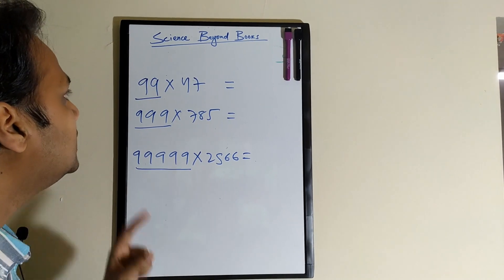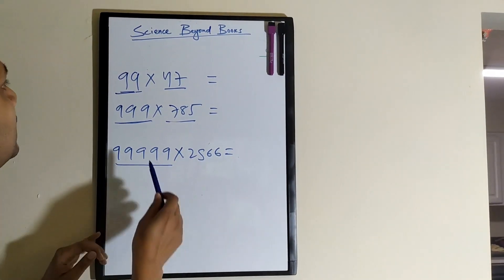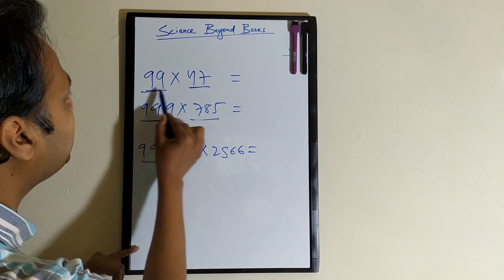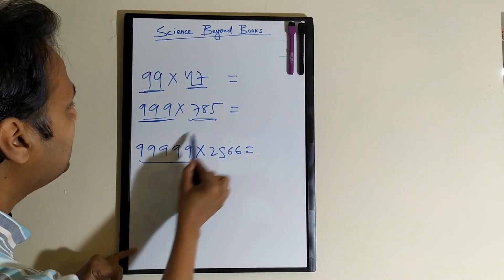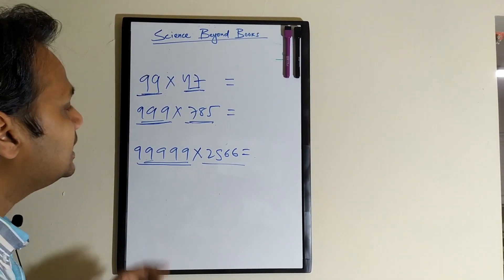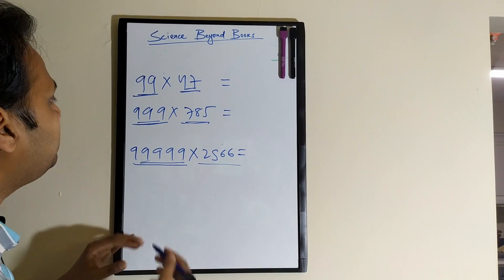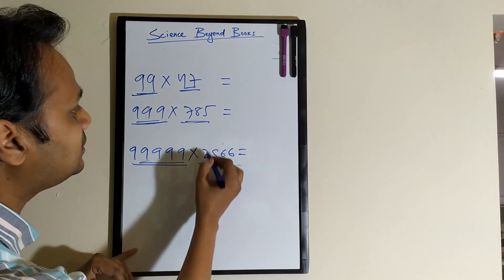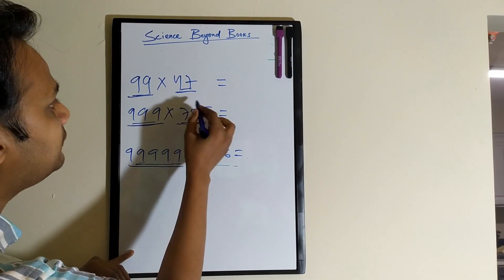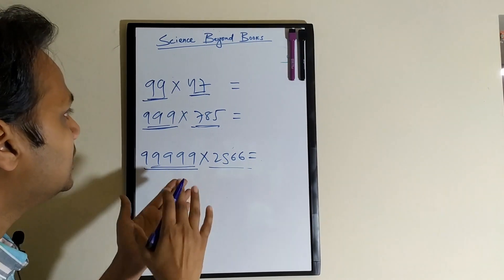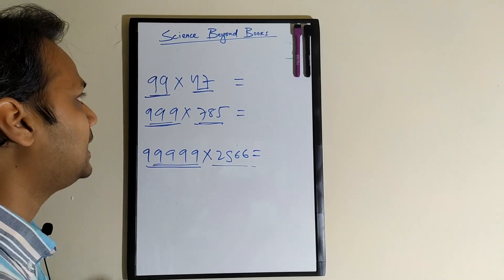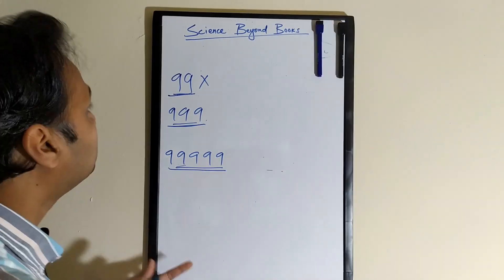First of all, we learn how we multiply numbers of the same digit count, like 2-digit by 2-digit, 3 by 3, 5 by 5, 8 by 8, whatever it is. Then we'll learn that if we need to multiply a 5-digit number with a 3-digit number, or a 3-digit number with a 2-digit or 1-digit number - so if the digits are not the same, how we're going to multiply that. We'll learn that later.